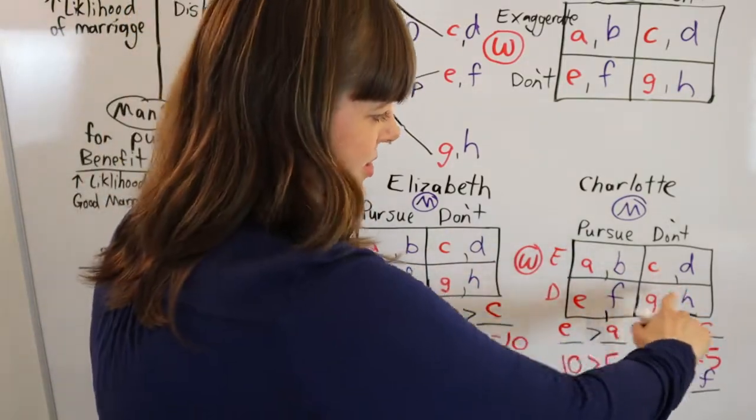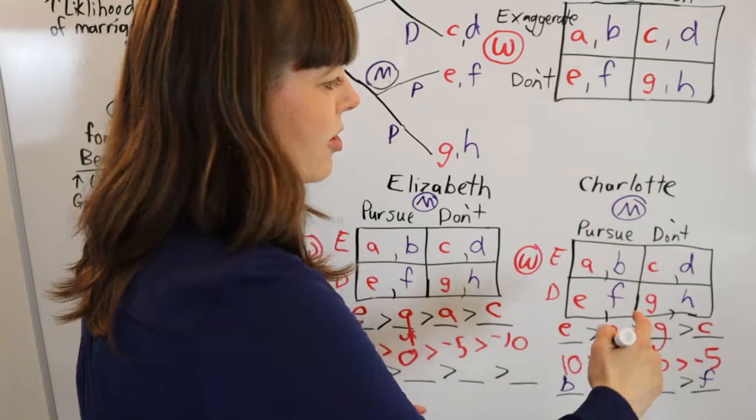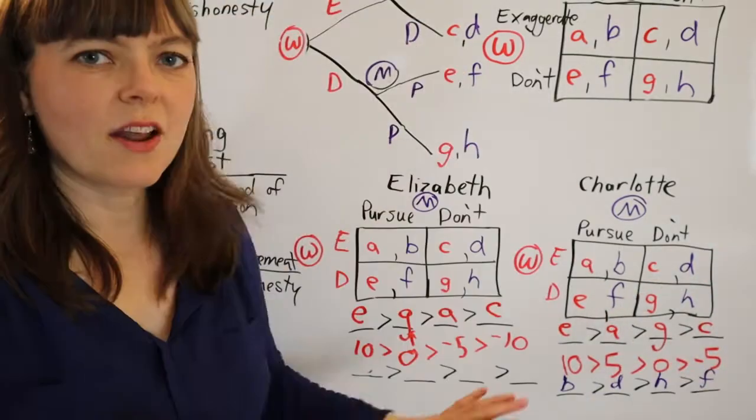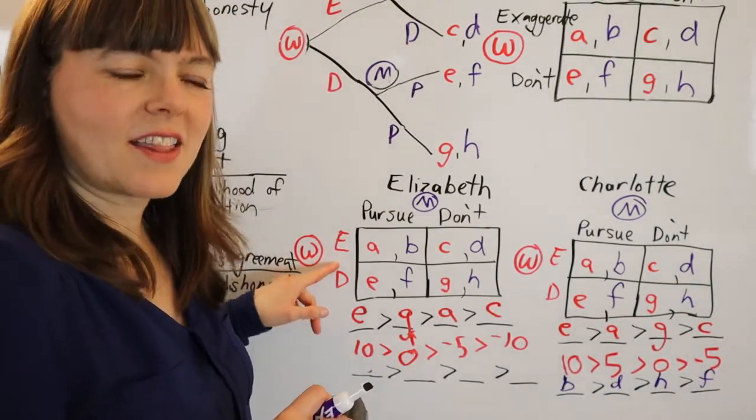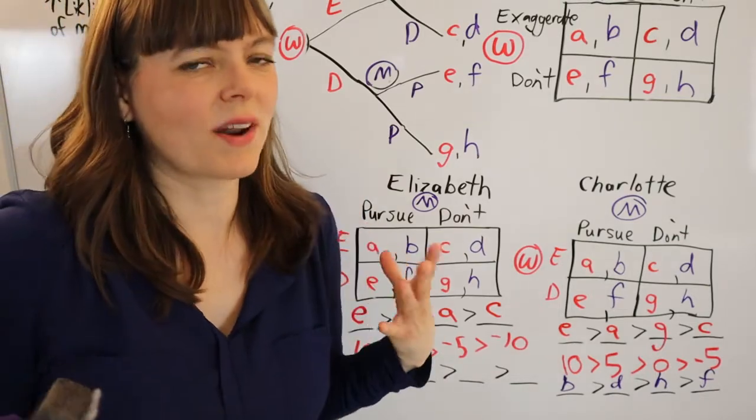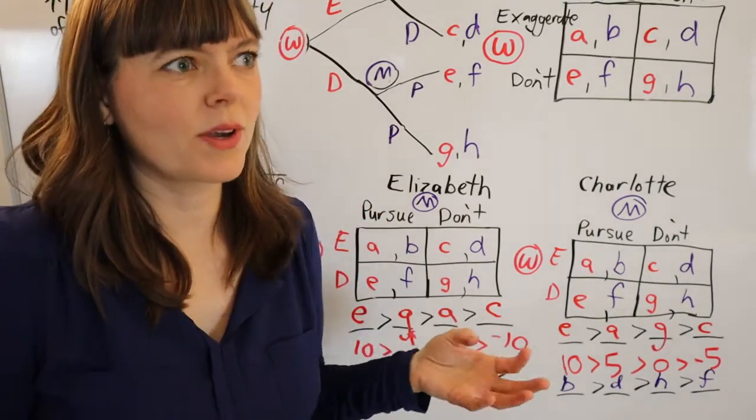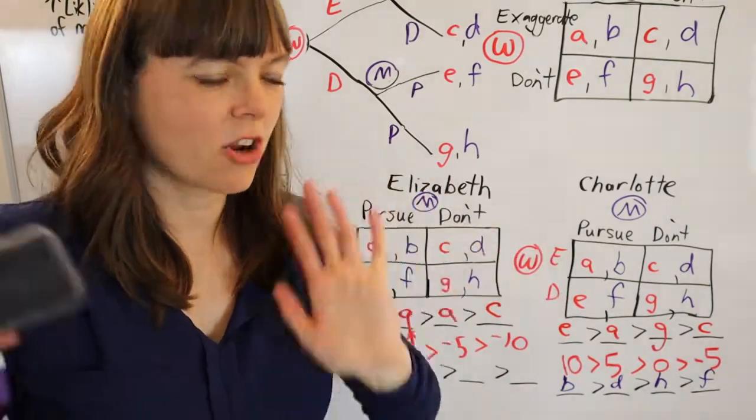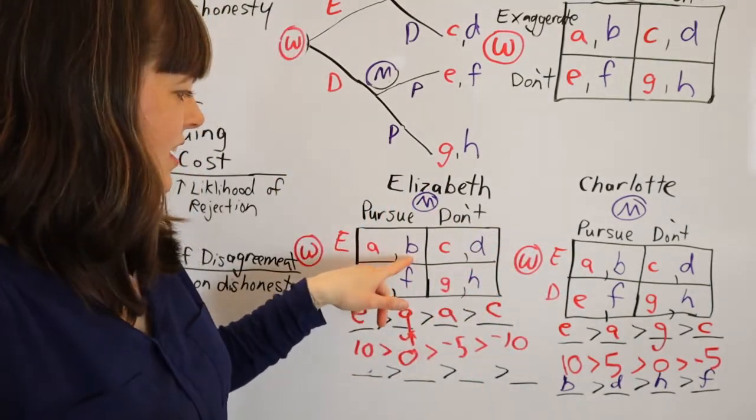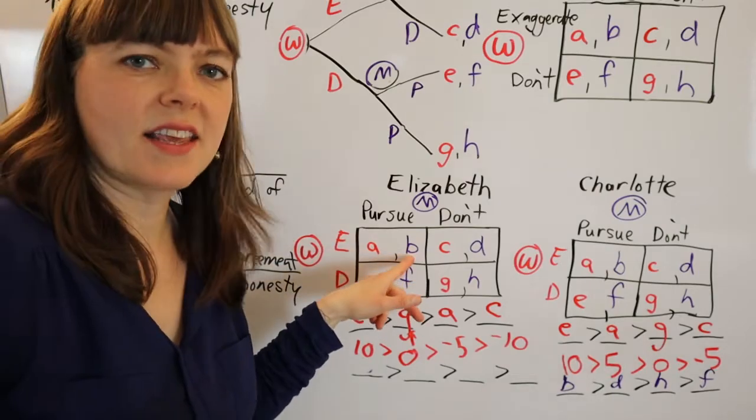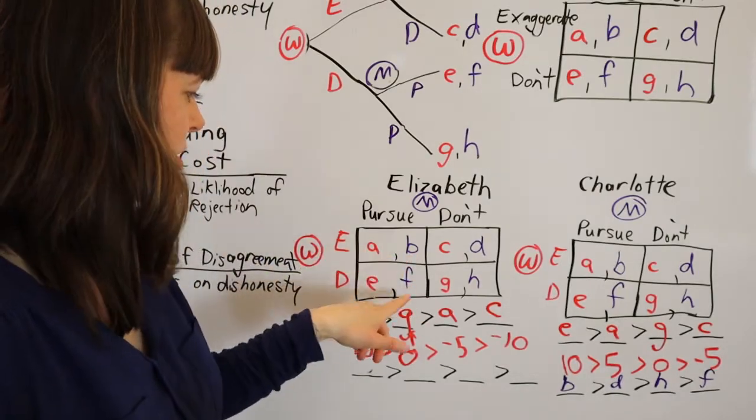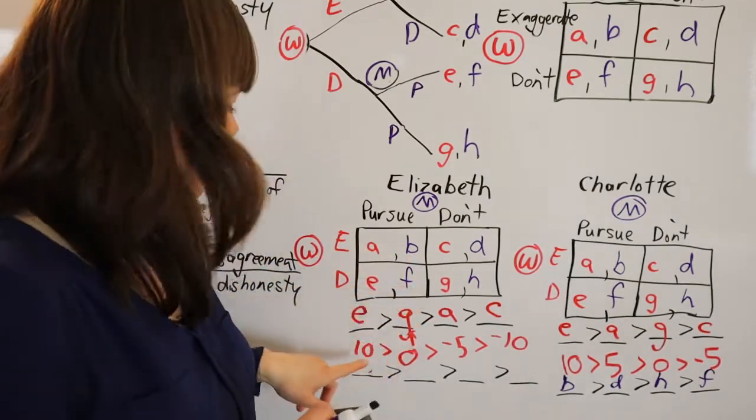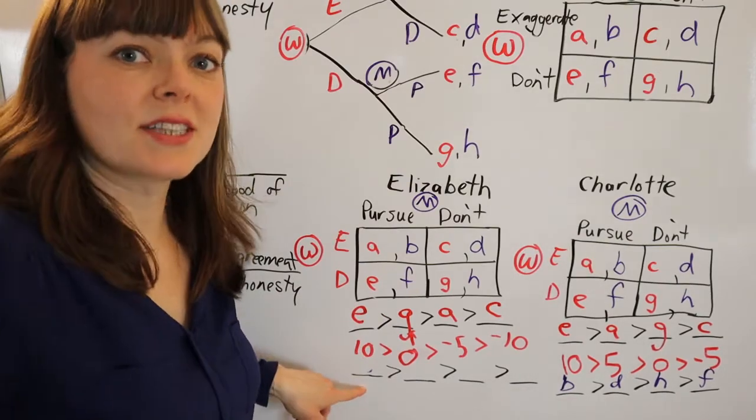Now over here for Elizabeth, I think Elizabeth is kind of thinking that he doesn't want to catch a woman who is being dishonest. Like that would not lead to a good marriage. So I'm actually not going to put B as his favorite choice. I'm going to put F as the man's favorite box from Elizabeth's perspective.